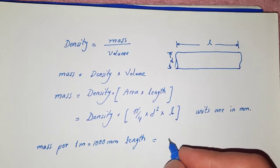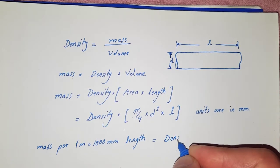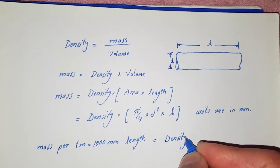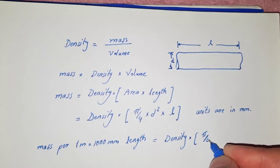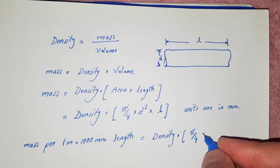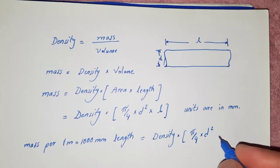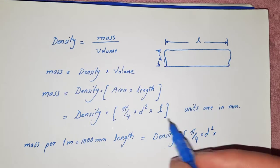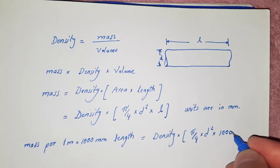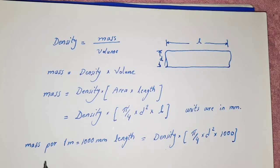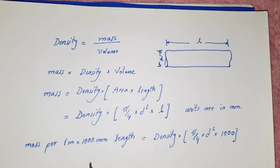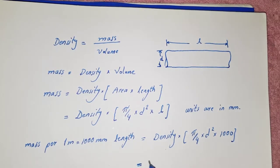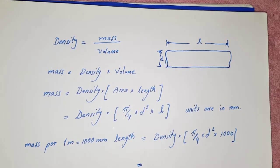Here we have density into pi by 4 into d square into 1000, since we said mass of the bar per one meter thousand millimeter length. From here we have to substitute the value of density of the bar.